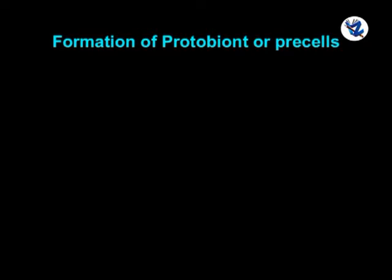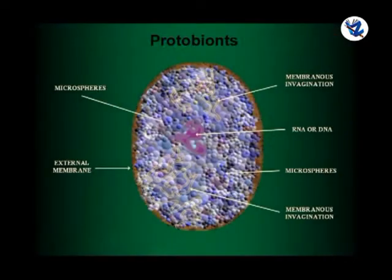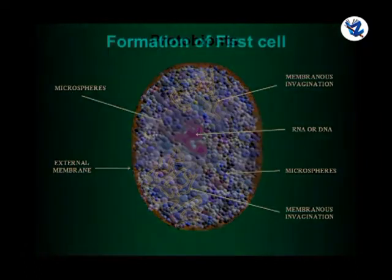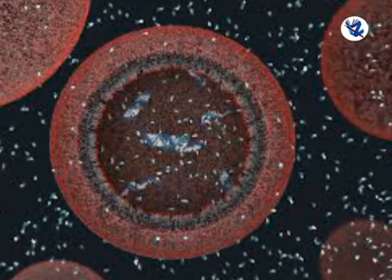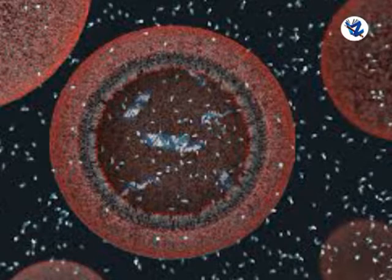The nucleic acid along with inorganic and organic molecules formed the first form of life, called protobionts or presells. Formation of first cell: The nucleic acid in presells had the capacity to multiply gradually and started directing series of chemical reactions like protein synthesis. This chemical evolution led to biological evolution.